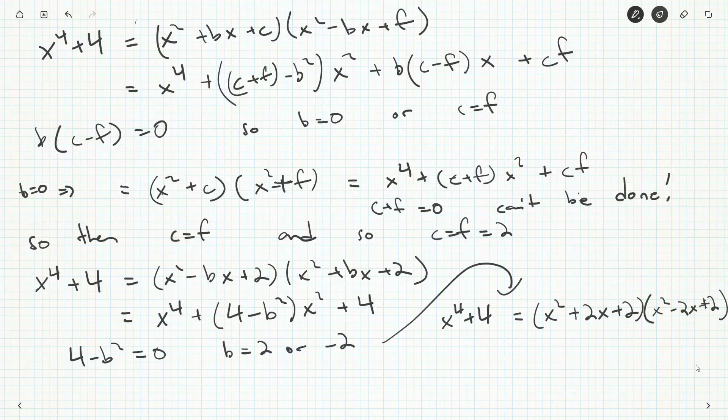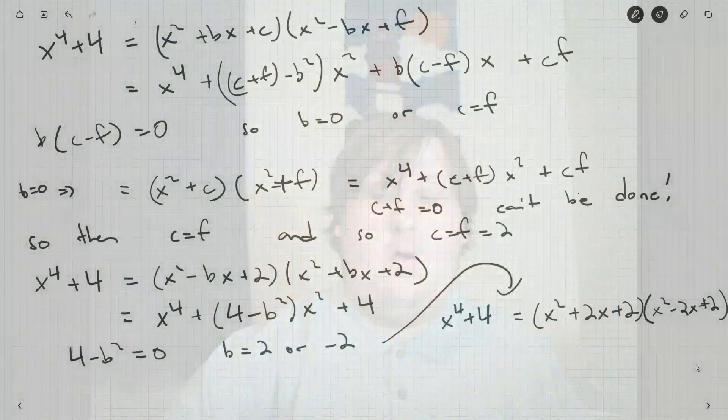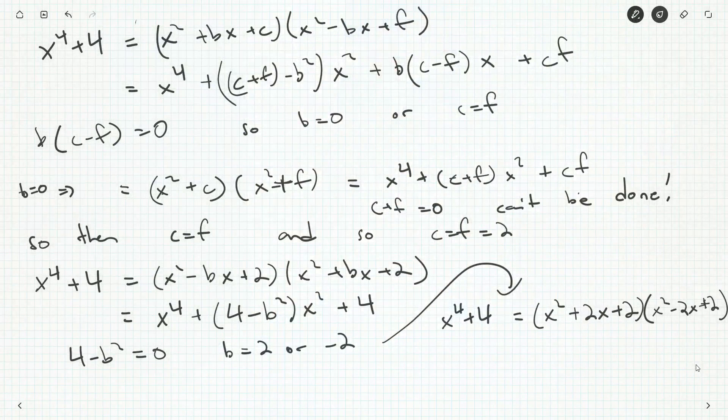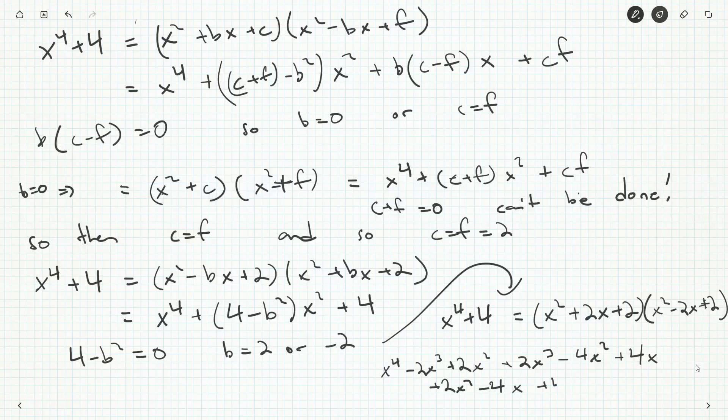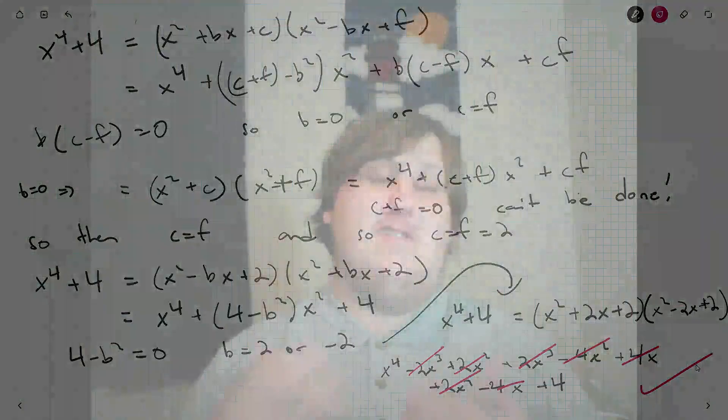So integer coefficients, everything's fine. What I would do at this stage, just because we've come so far, is just for our purposes, double check. Expand it out. Does it actually work? So we're just going to quickly do that. x squared, so we'll get x to the four minus two x cubed plus two x squared. And then we'll get plus two x cubed minus four x squared plus four x. And then plus two x squared minus four x plus four. Let's cancel some things out. That two x cubed and that two x cubed cancel. The four x and the four x cancel. And two x squared, two x squared, and minus four x squared. Everything works out. So we're doing good. We checked it. It works out.